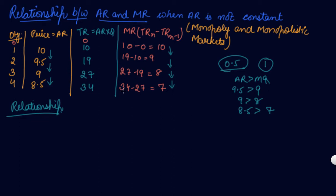When MR is declining, we are adding less and less to TR for every additional unit sold, so TR increases only at a diminishing rate. Your AR is reducing, so from selling one additional unit you are adding to your total revenue, but your total revenue is being added at a diminishing rate.